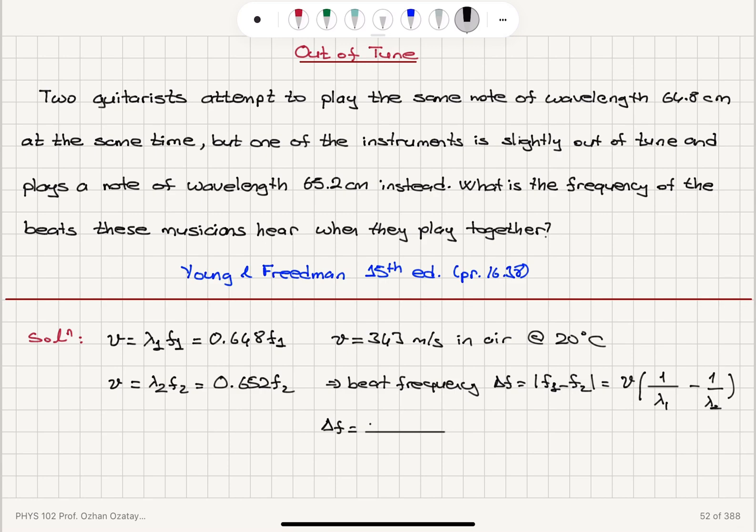that is V times lambda 2 minus lambda 1 divided by lambda 1, lambda 2. And if we substitute the numbers here, the beat frequency can be calculated. It's going to be 343 times 0.652 minus 0.648 divided by 0.652 times 0.648.